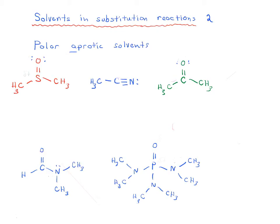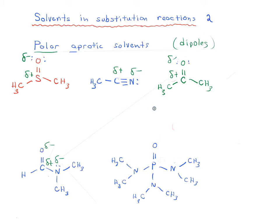Now let's talk about polar aprotic solvents. Polar aprotic solvents are also polar solvents. Thinking about electronegativity differences again: oxygen and sulfur — oxygen is partially negative and sulfur is partially positive; nitrogen is partially negative and carbon is partially positive. We can draw these dipoles. They have dipoles, which means they are polar. But look what's missing — they're aprotic in the sense that there are no O-H bonds and no N-H bonds, meaning no hydrogen bonding.